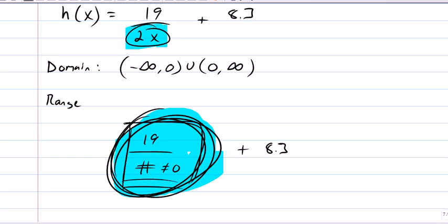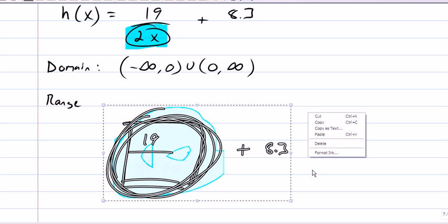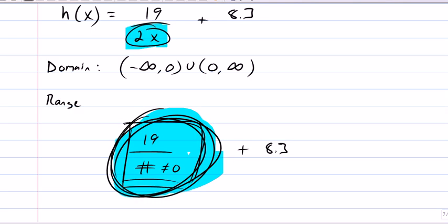So, take every number except zero and add 8.3. What numbers are you working with? Everything except 8.3. So, our range is negative infinity to 8.3 union 8.3 to infinity.